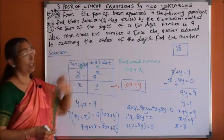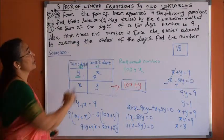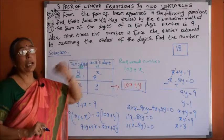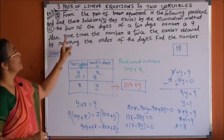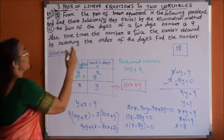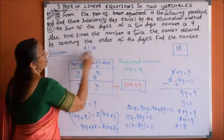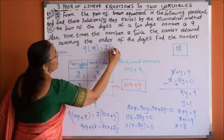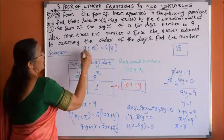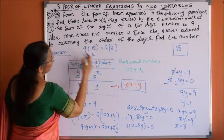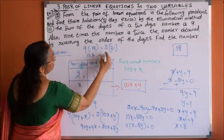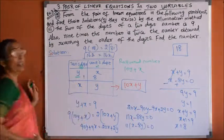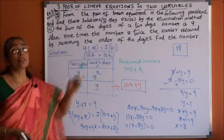We check whether the conditions are satisfied. The two-digit number is 18: 1 plus 8 equals 9 — correct, first condition satisfied. For the second condition: 9 times 18 equals 162. Reversing the digits of 18 gives 81, and 2 times 81 equals 162. Both conditions are satisfied. Therefore, the required number is 18.